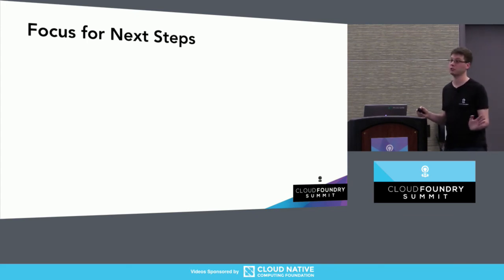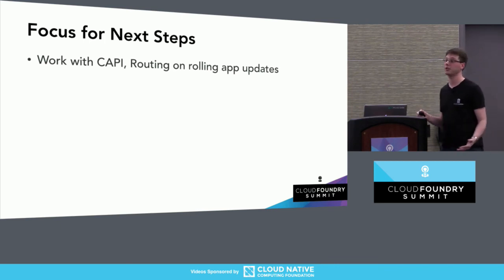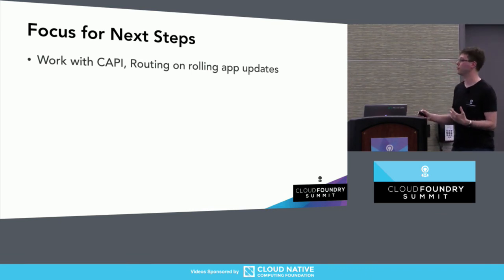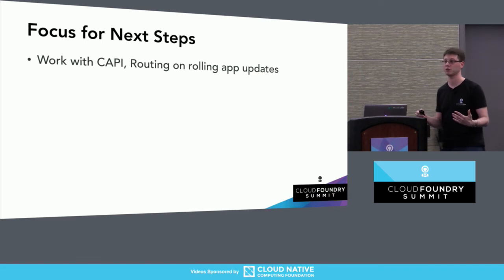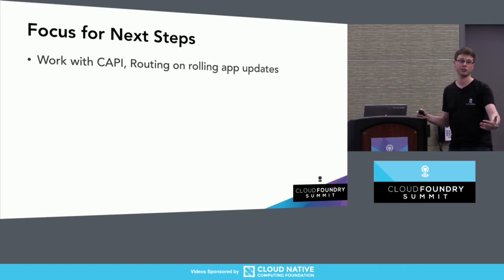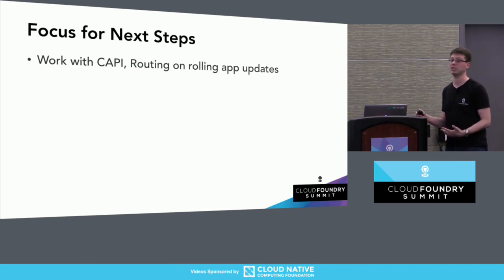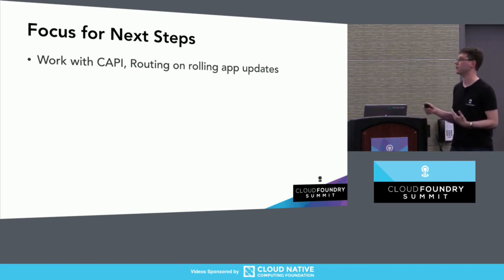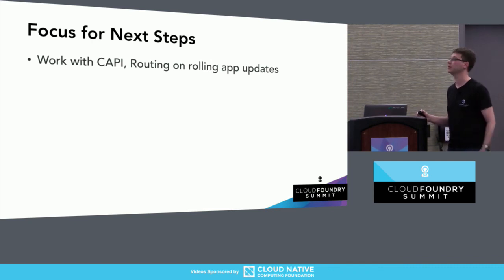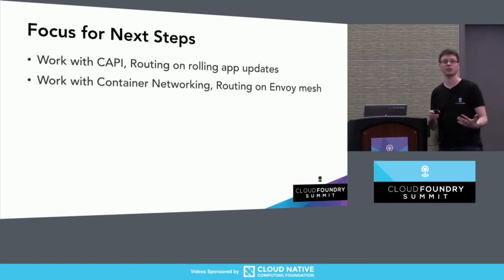Lastly, let me tell you about things we're considering for the next few months. If you were at the keynote on Thursday, you likely saw Zach Robinson's presentation about rolling app updates. We've been considering this for a while, and I think we finally have the right approach in terms of the developer experience and using that to drive internal system improvements. We're looking forward to collaborating with the CAPI team and especially the routing team on coordinating that into a safe and reliable rolling update mechanism that keeps your application sufficiently routable during the update.